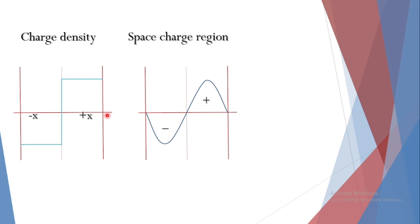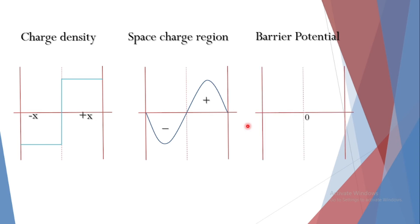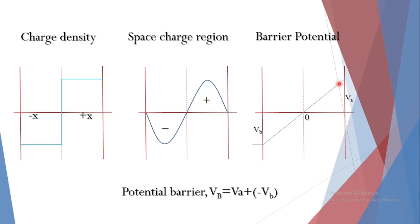We can also observe the nature of the barrier potential. In the depletion region, the barrier potential slowly increases: on the P side the potential is negative, and on the N side it is positive. The potential barrier VB equals VA minus VB, where the negative sign implies the direction. This is how the barrier potential varies across the space charge region.